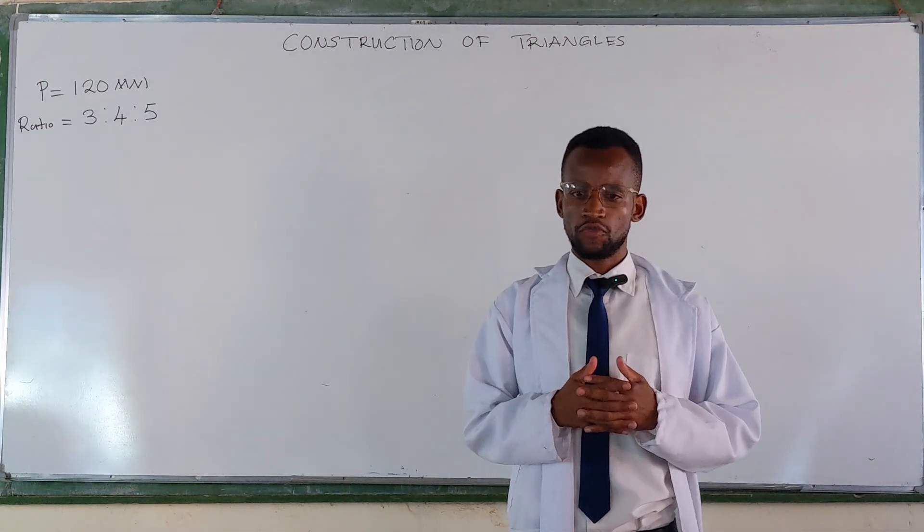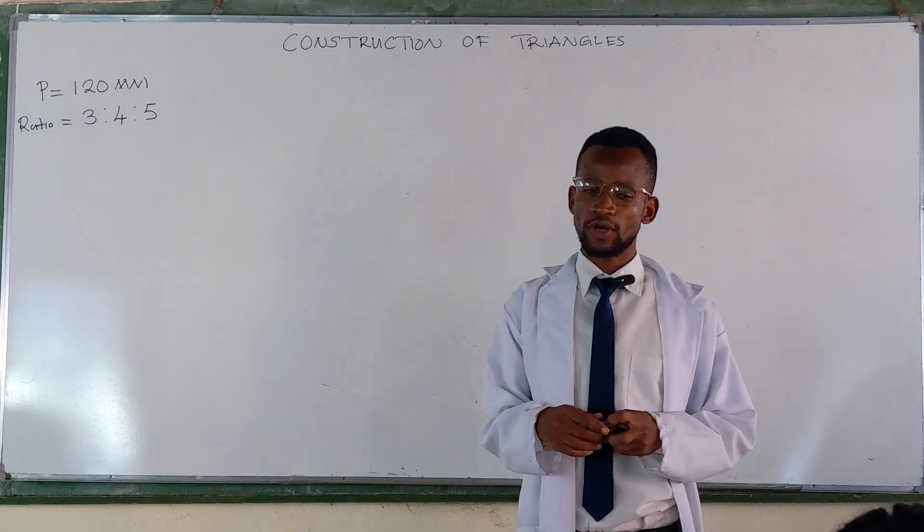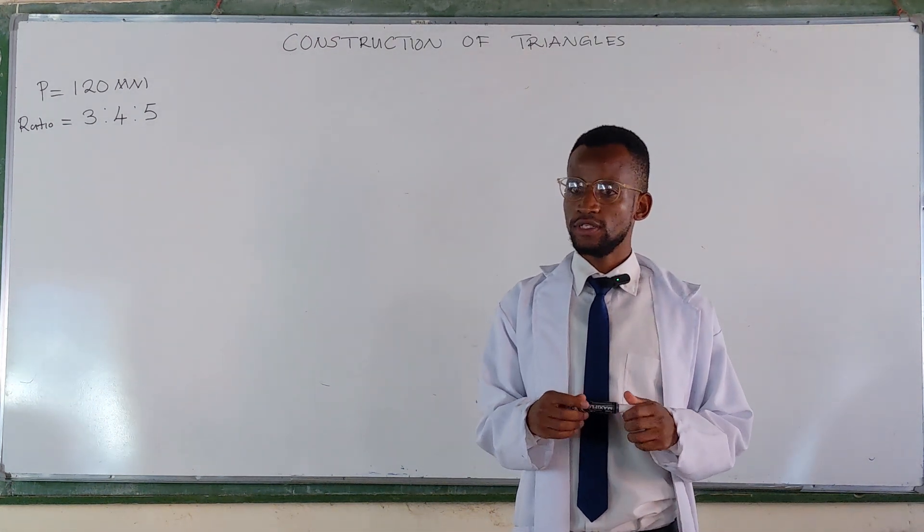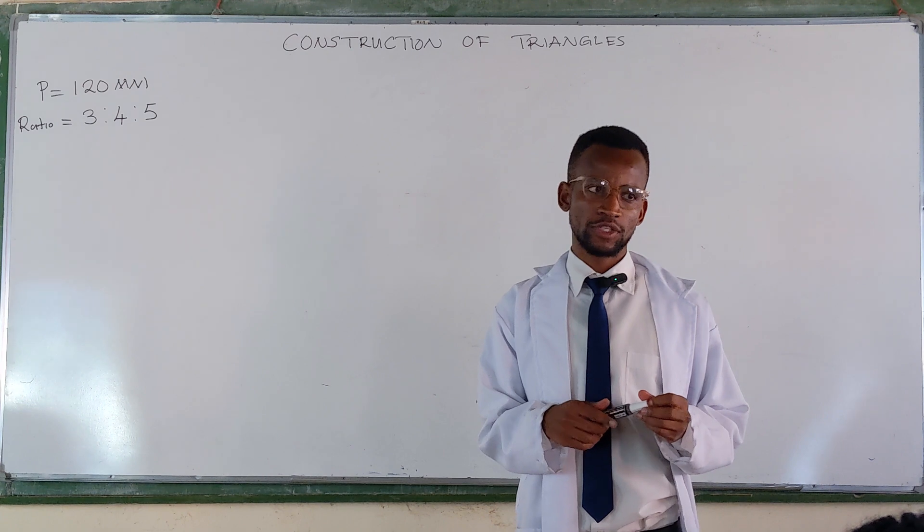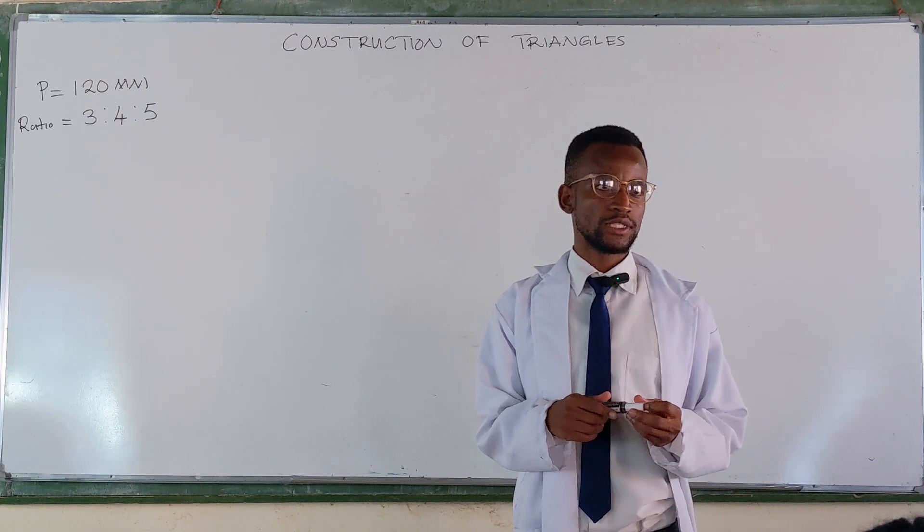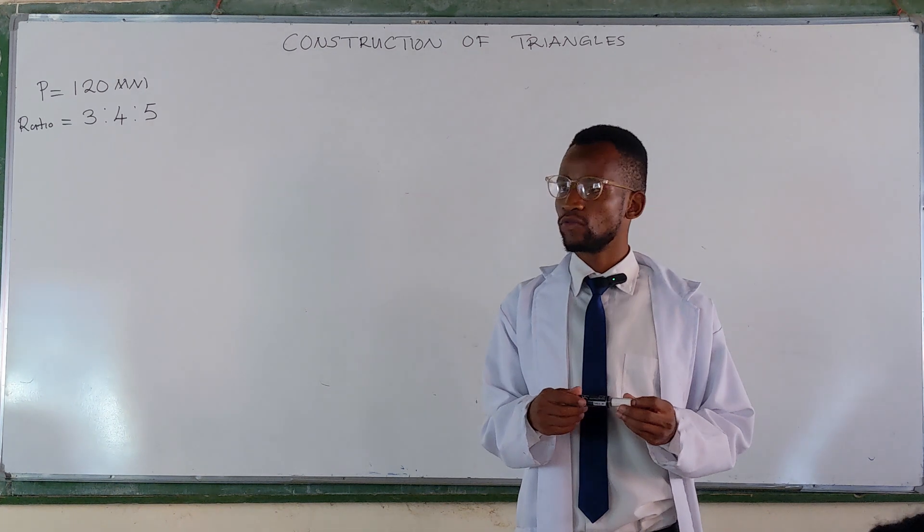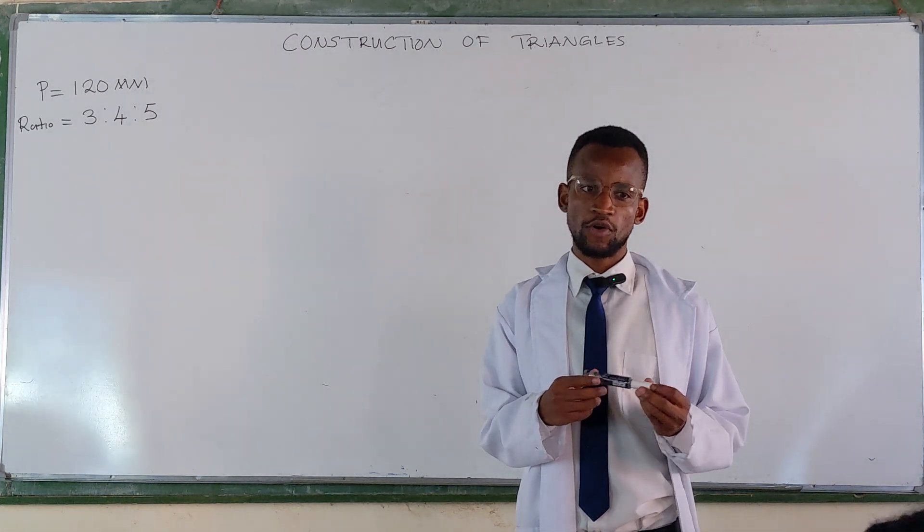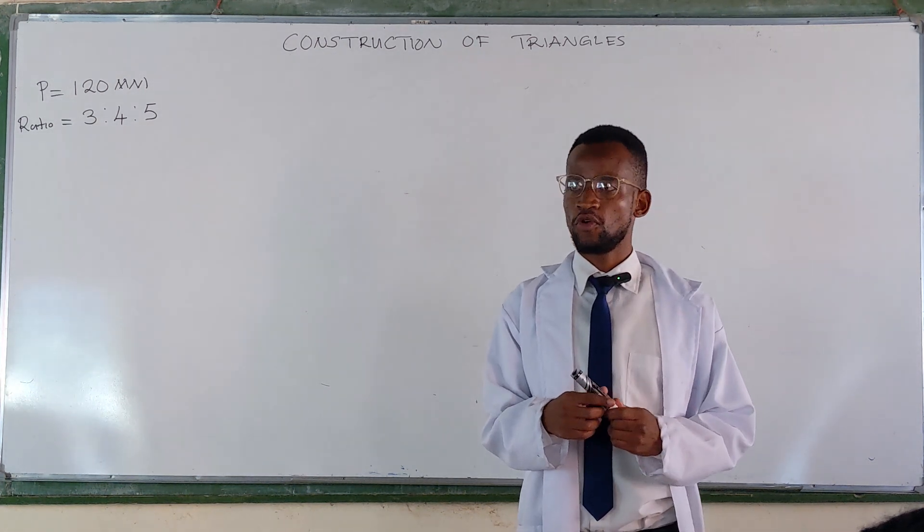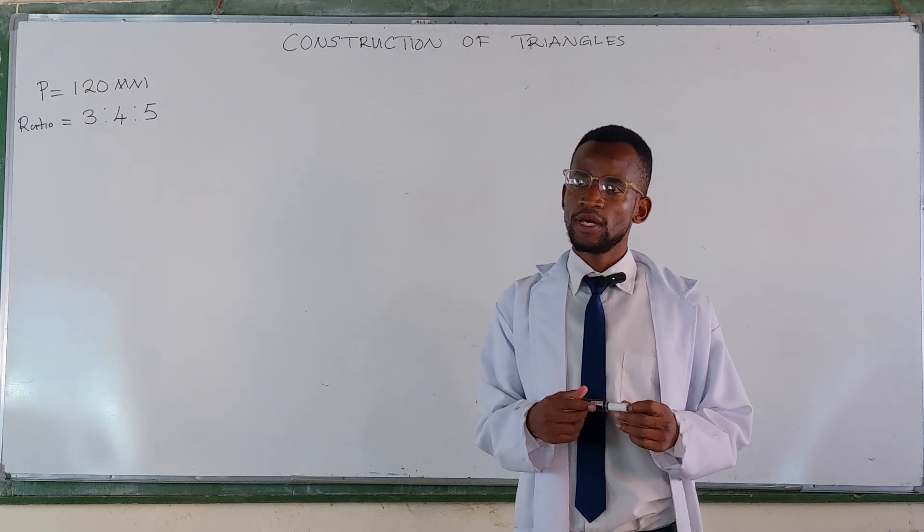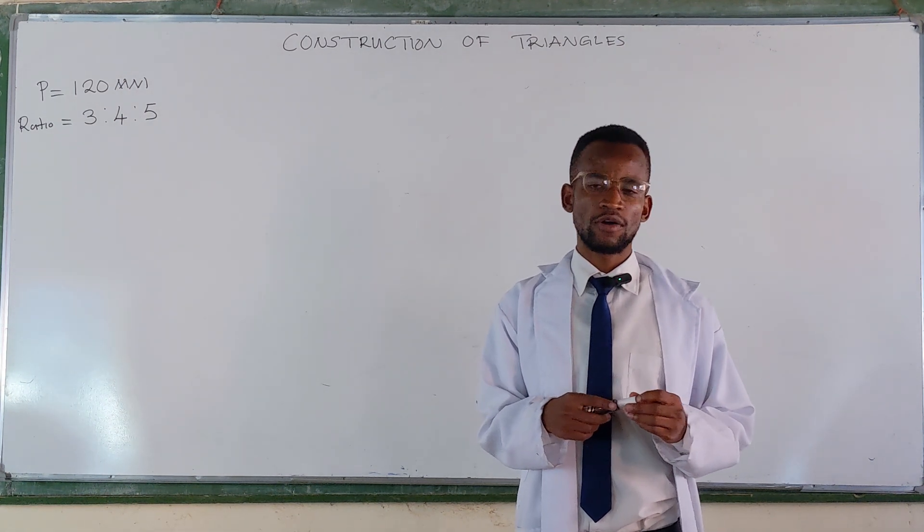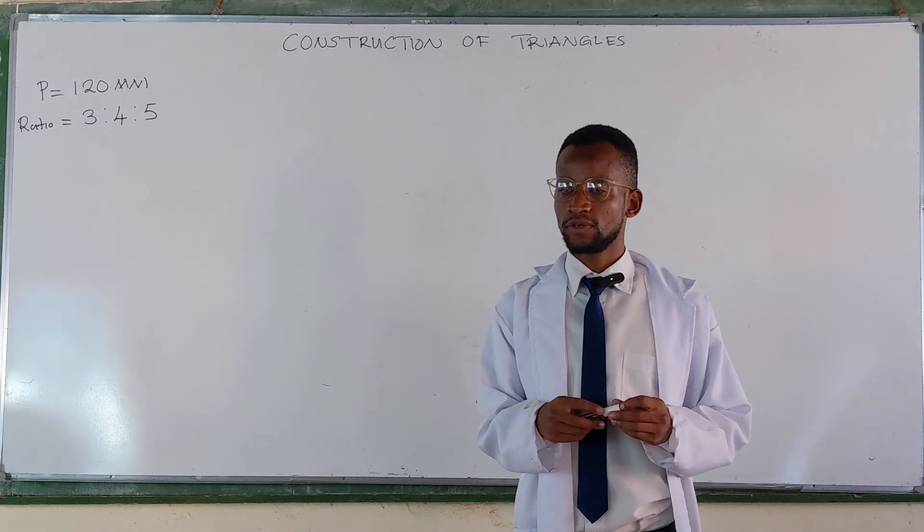From our introduction of triangles, we discussed a few properties of a triangle. One of which was the perimeter, and we said the perimeter of a triangle, or any given shape for that matter, is the total distance around that given shape.